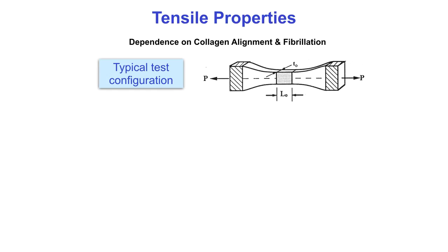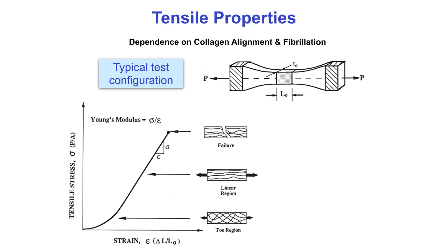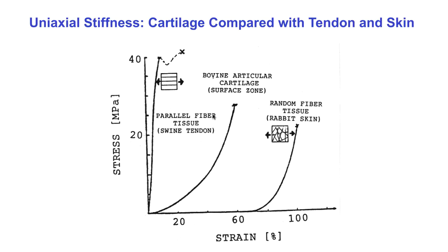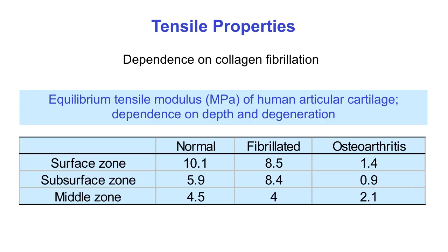The tensile properties of cartilage are tested in a similar way to those of other soft collagenous connective tissues, and the uniaxial stress-strain relation looks very similar, with a toe region and a linear region prior to failure. The elastic stiffness of cartilage is in between that of tendons and skin. Note that as the collagen structure varies with position in the joint and with injury and disease, the tensile properties change. The more aligned collagen in the superficial zone makes the tensile stiffness of this tissue higher than in the deeper zones. Collagen damage caused by wear or injury, known as fibrillation, slightly affects tissue stiffness.